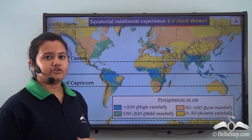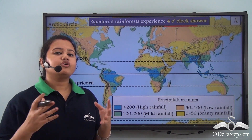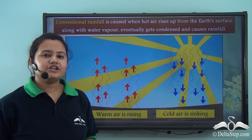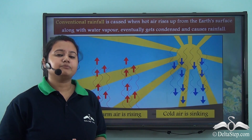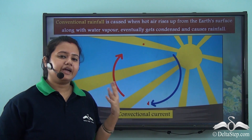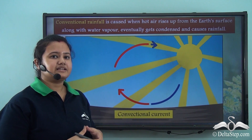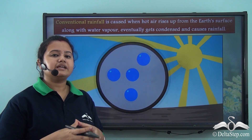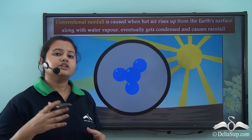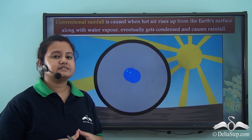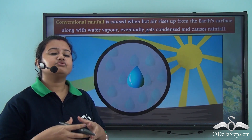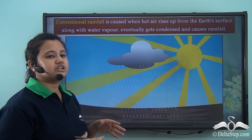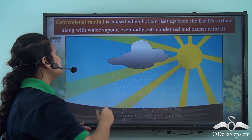The equatorial rainforests experience a 4 o'clock shower, which is a type of convectional rainfall. Convectional rainfall occurs when the earth's surface gets heated up due to intense heat of the sun. The hot ground heats up the air lying above it, warm air rises and cold air sinks down, leading to the formation of convectional currents. The surface water also evaporates as water vapor, which mixes with air particles and condenses to form clouds. The clouds become heavier due to accumulation of water droplets and shed as rainfall. This rainfall formed due to convectional currents is known as convectional rainfall.